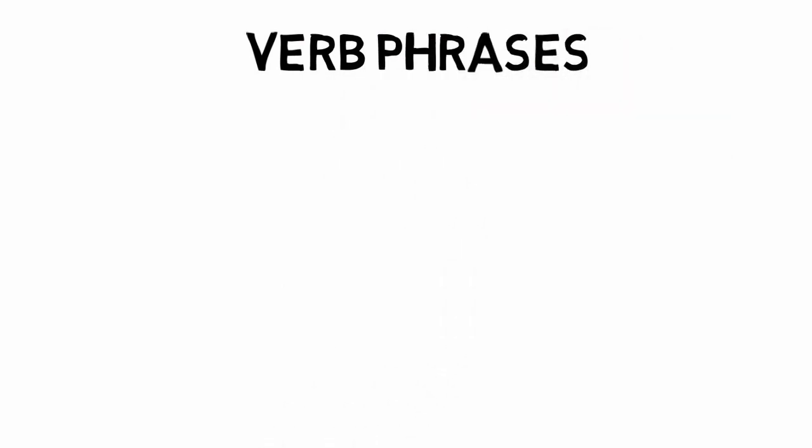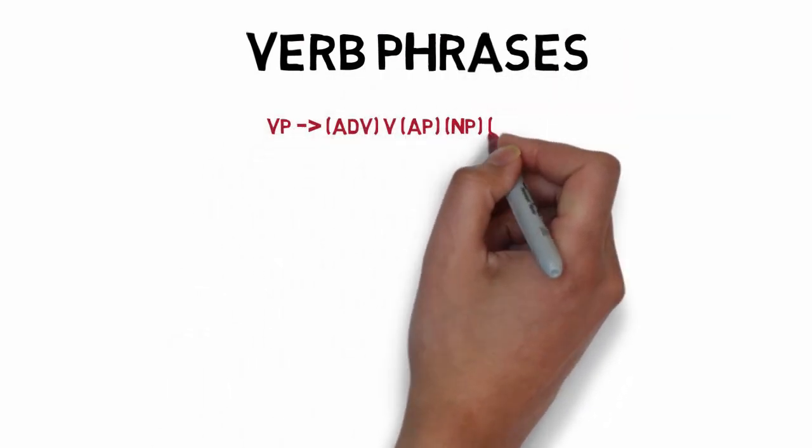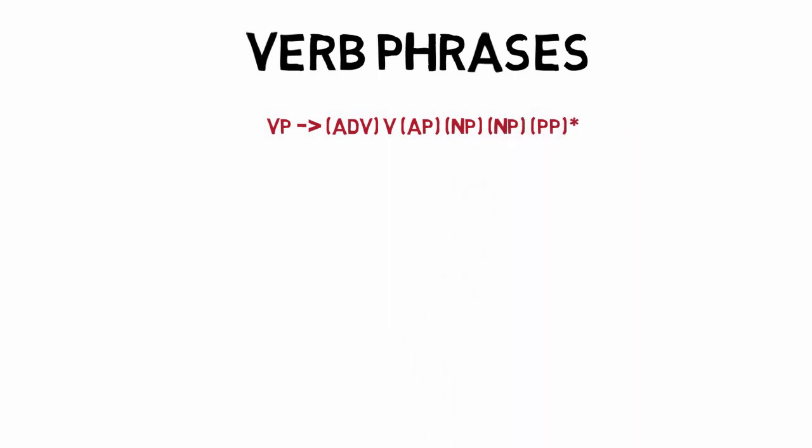Next up is a verb phrase. A verb phrase is made up of one optional adverb, an obligatory verb, one optional adjective phrase, two optional noun phrases, and zero to infinity optional prepositional phrases.